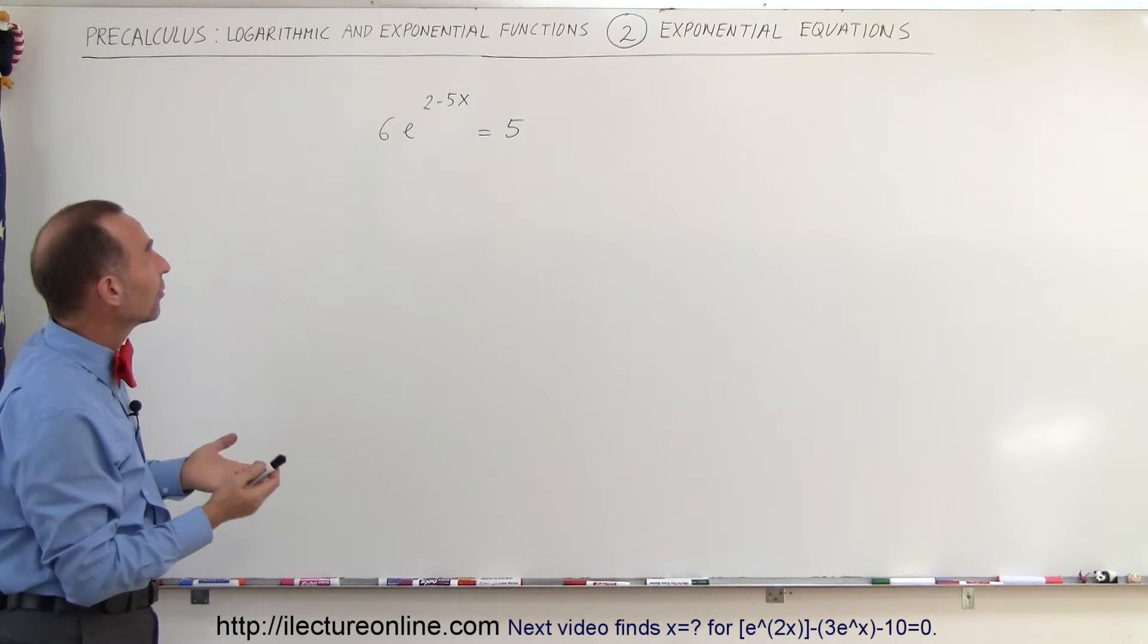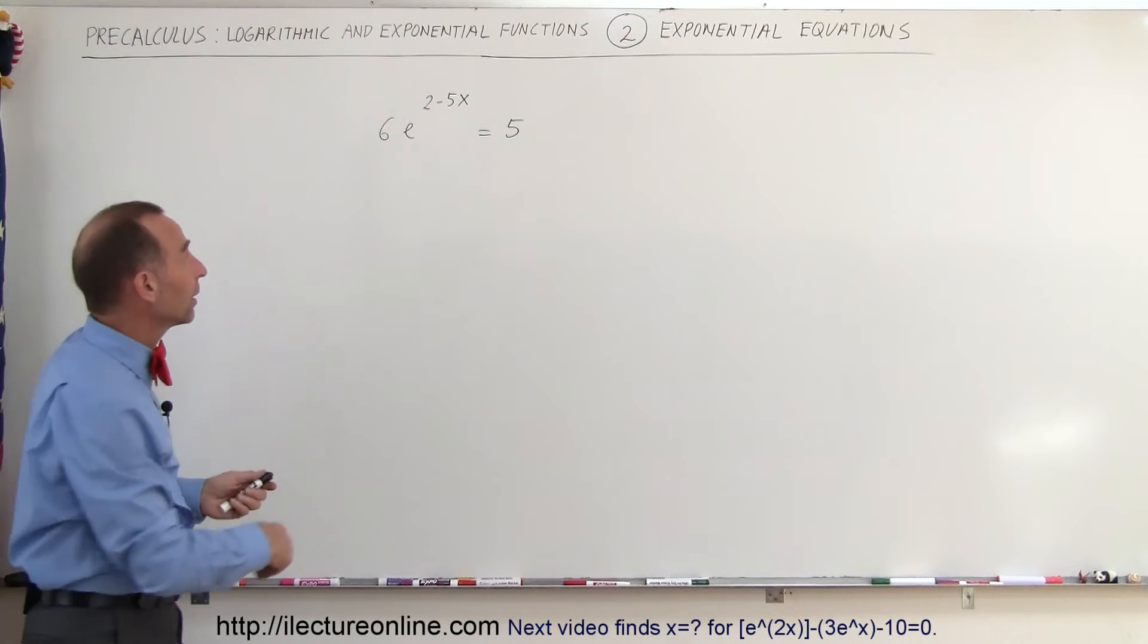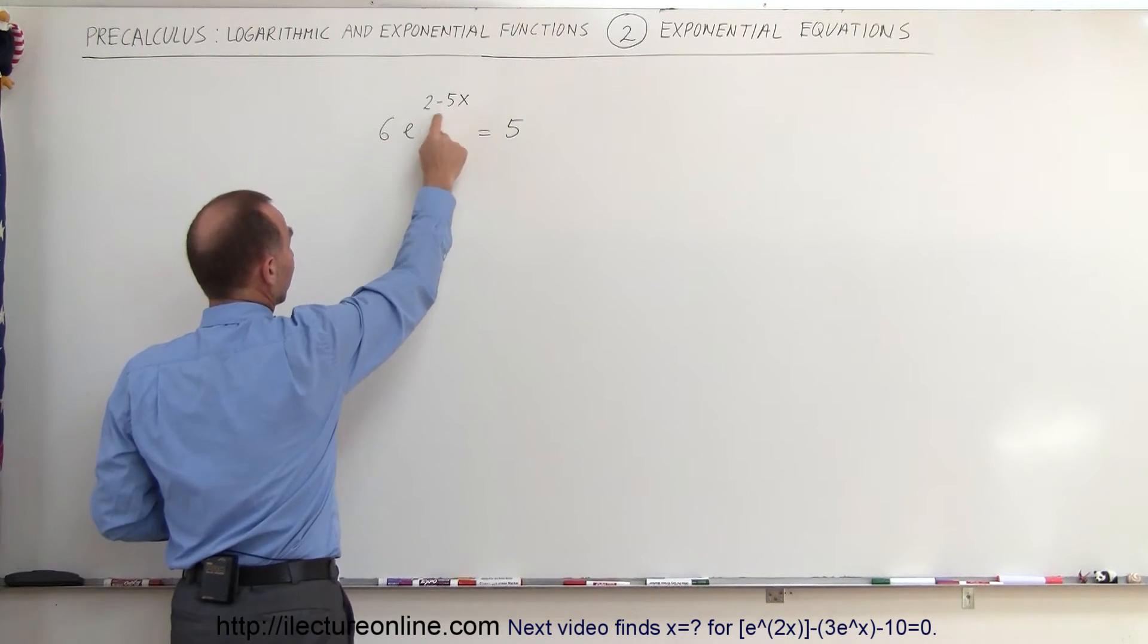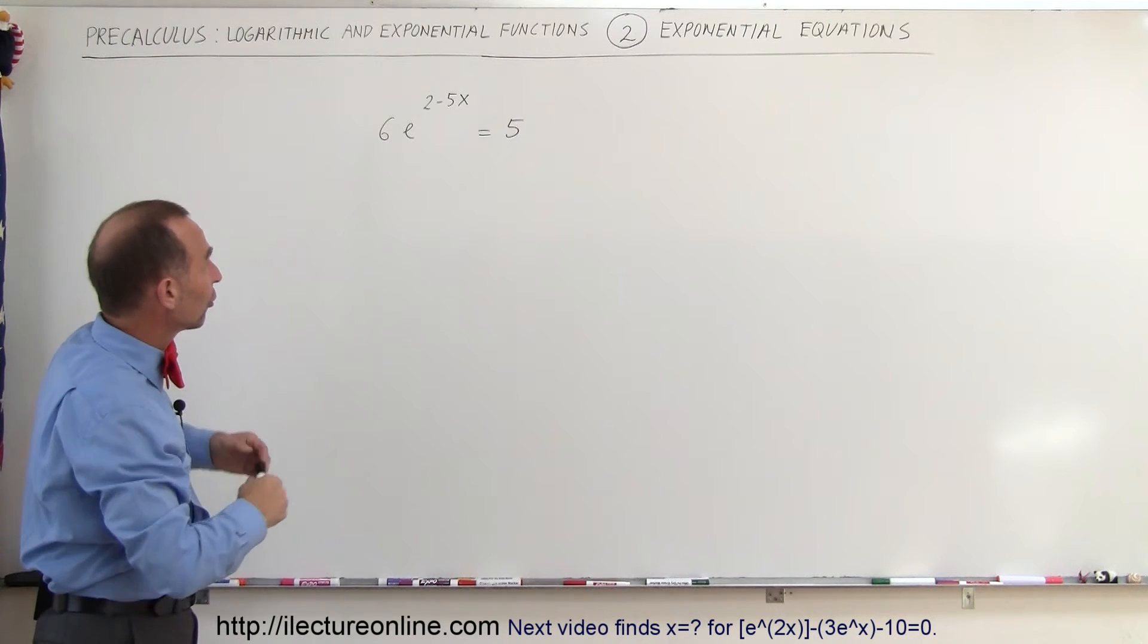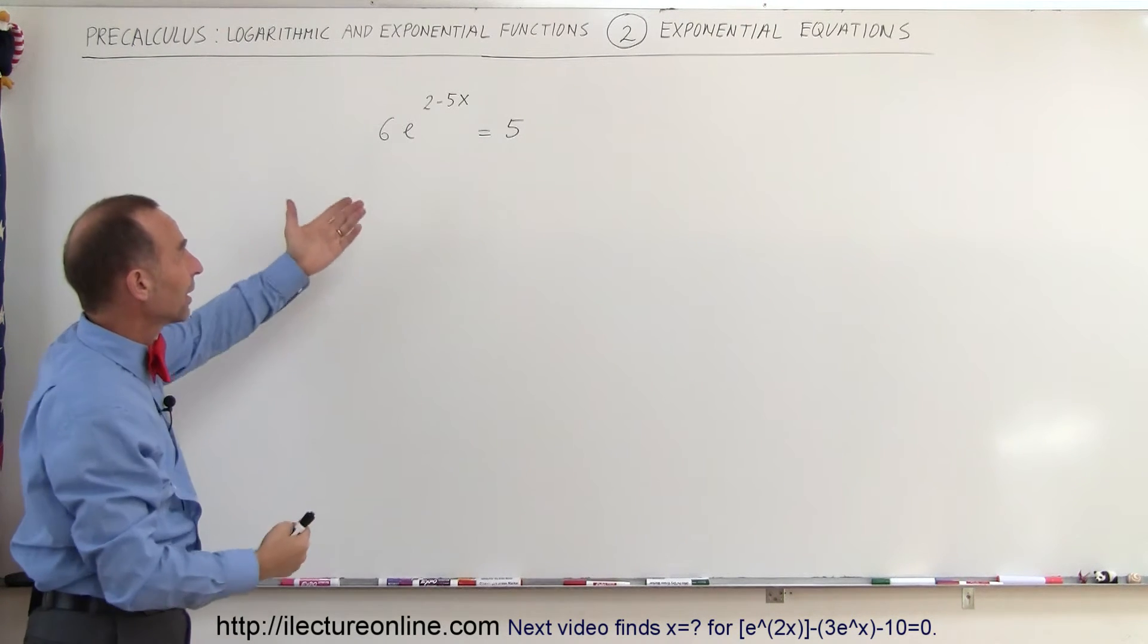First we look at this and say, okay, that's an exponential equation because it has the variable x in the exponent. The natural tendency is to take the natural log of both sides so we can isolate the x.